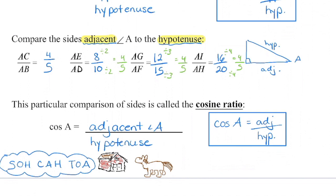Those are the three primary trigonometric ratios: sine, cosine, and tangent. There is an acronym to help remember which sides we compare. Tangent is opposite divided by adjacent; sine is opposite divided by hypotenuse; cosine is adjacent divided by hypotenuse. This is SOH-CAH-TOA. If you can't spell it, you can remember: 'Some Old Horses Can Always Help The Other Animals' — picture a helpful old horse on a farm going around helping the other animals.